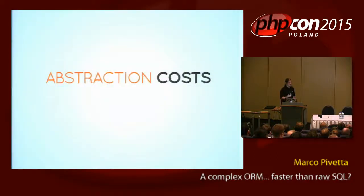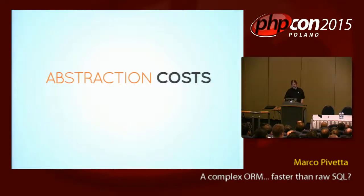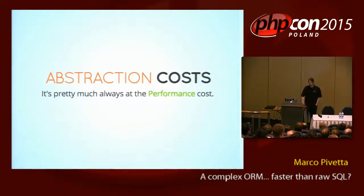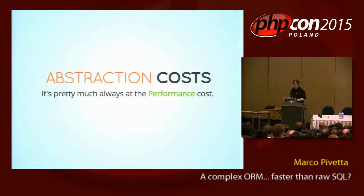Any abstraction has a cost. Anything that you want to push down to machine level to make it faster is going to be less abstracted. These tools like the ORM come with this cost — the cost is always abstraction and performance. You get either less abstraction or more performance. It's kind of difficult to get both.